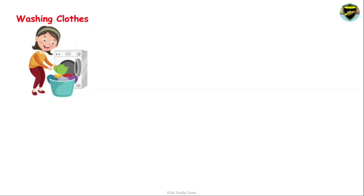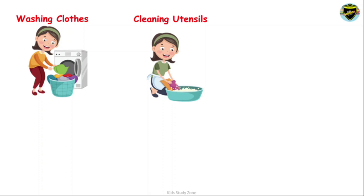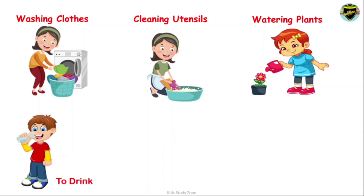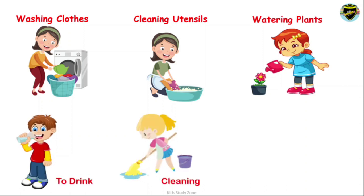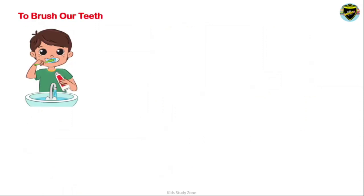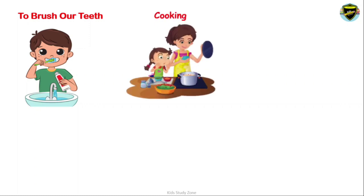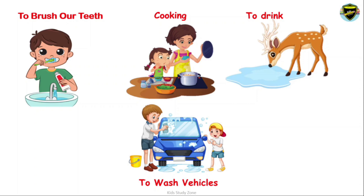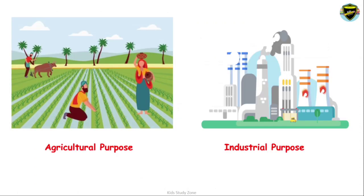We need water for washing clothes, cleaning utensils, watering plants, drinking, cleaning, bathing, brushing our teeth, and cooking. Animals also need water to drink and bathe. We need water to wash vehicles, for agricultural purposes, and for industrial purposes as well.